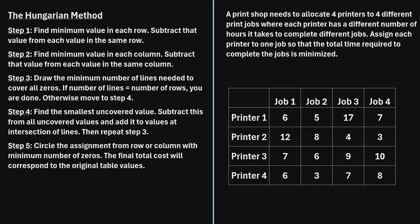In this video, I will explain how to solve an assignment problem by using the Hungarian method. In operations research, the assignment problem is any type of problem where you have employees or machines that you want to assign to complete a specific task or job, and you only want to assign each employee or machine to one task, minimizing total cost or total time. The most common way to solve this is the Hungarian method, a five-step process outlined here.